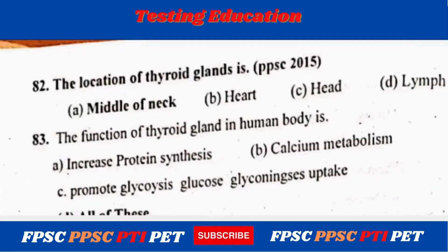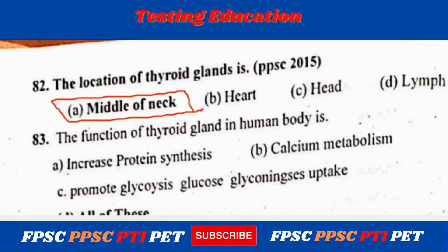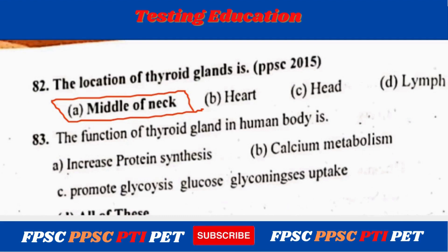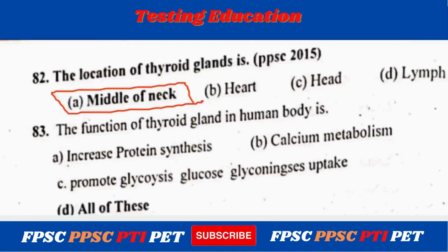The thyroid gland is located in the middle of the neck. The functions of the thyroid gland in the human body include increasing protein synthesis, calcium metabolism, promotion of glucose uptake — all of these.